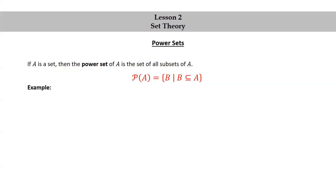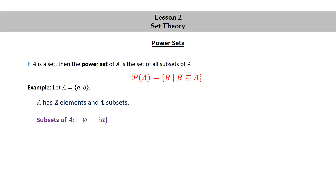Let's look at an example. Let capital A be the set consisting of little a and little b. Capital A has two elements and four subsets. The subsets of A are the empty set, the set consisting of little a, the set consisting of little b, and the set itself consisting of both little a and little b. The cardinality of A is two, and the cardinality of the power set of A is four.